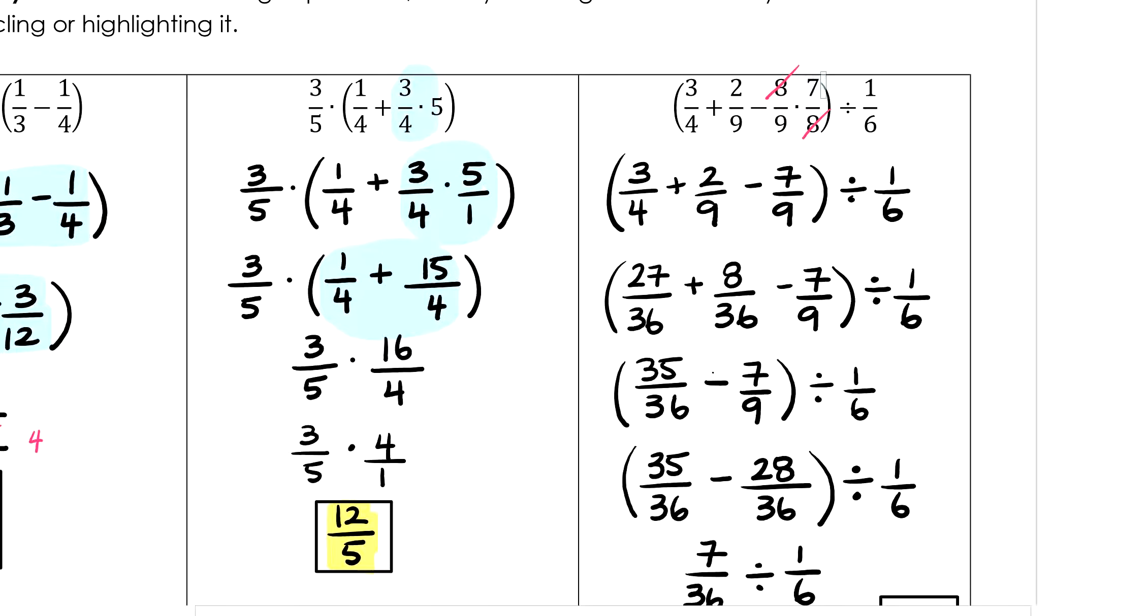For the third one, I followed BEDMAS within the parentheses again to begin with, but I want to warn you of this trap waiting for you right here. It's really tempting for you to do 2/9 minus 7/9, but you mustn't do that because addition and subtraction are operations of equal priority, so they must be done left to right when they both appear. So we have to do 3/4 plus 2/9 first.